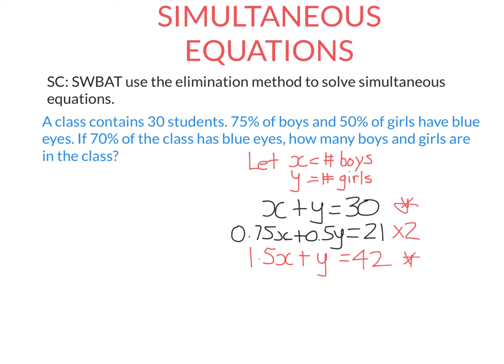I can eliminate the y's by subtracting the bottom equation from the top. So x minus 1.5x gives me negative 0.5x, y minus y is zero—the y is eliminated. And I get 30 minus 42 equals negative 12. Solving this equation by dividing by negative 0.5, I get x equals 24.